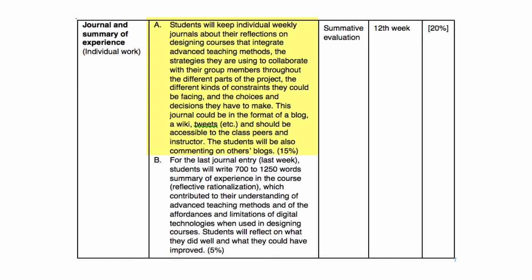You will also document the different kinds of constraints you are facing and the choices and decisions you are making. This journal could be in the format of a blog, a wiki, or tweets, and should be accessible to class peers and the instructor. You will also be commenting on others' blogs.